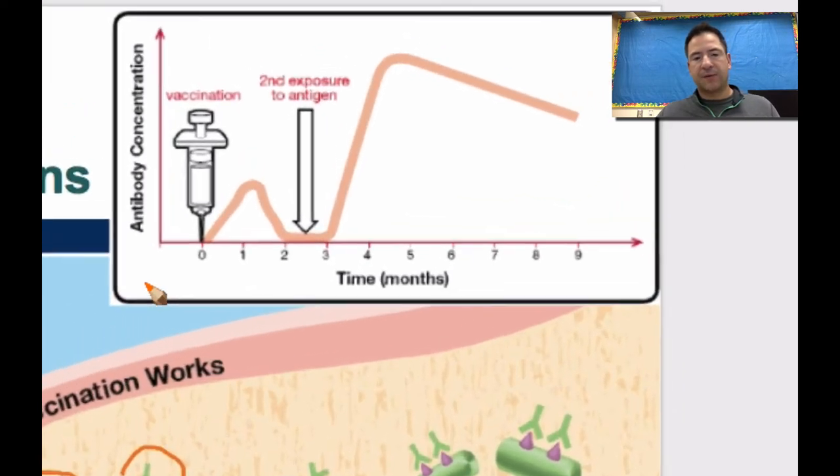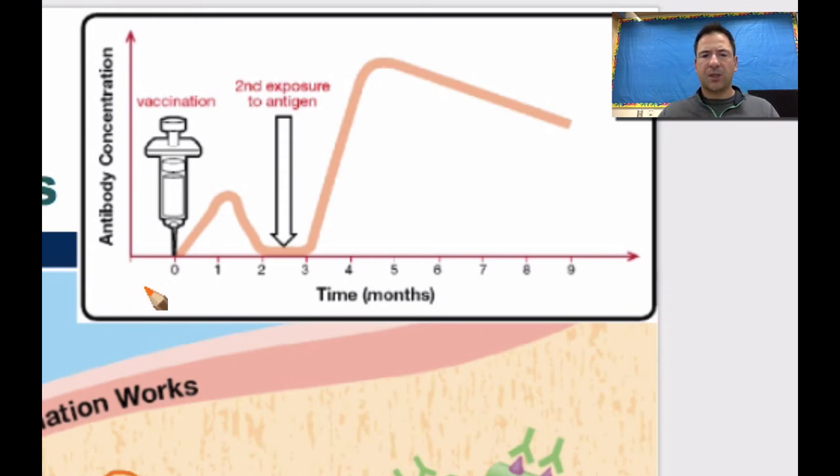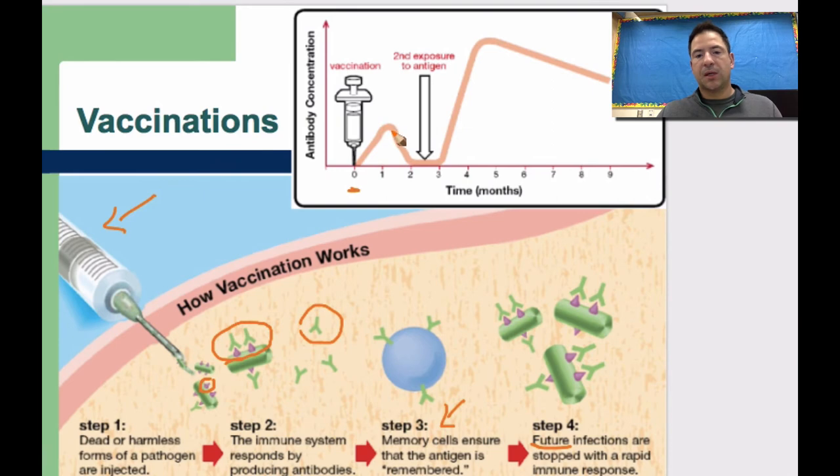Now looking at this graph, this is typically a graph you'll see on the diploma. Now it might ask you what it looks like in terms of vaccination. So if we look at antibody concentrations, so this is how much of the antibody is going to be produced. So we inject the pathogen at this point right here. So what's going to happen is our body is going to produce antibodies and then remember those antigens.